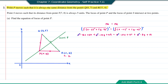Moving everything to the left-hand side: negative 16x plus 22x gives positive 6x. Negative 14y plus 8y gives negative 6y. Then moving 121 and 16, which total 137, to the left: 64 plus 49 equals 113, then minus 137 gives negative 24. So the equation is 6x minus 6y minus 24 equal to 0.